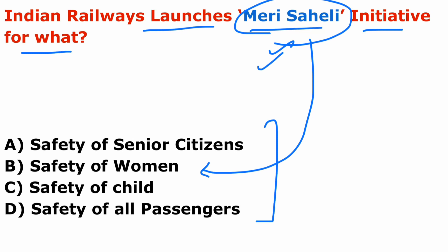The Meri Saheli program is funded under the Nirbhaya Fund; no additional expenditure is provided by the railway. A team of women sub-inspectors briefs women passengers on safety precautions and provides emergency contact numbers. The team collects seat numbers and contact information of women passengers and remains in contact throughout the journey. Collected information is passed to the destination and scheduled stoppage stations.